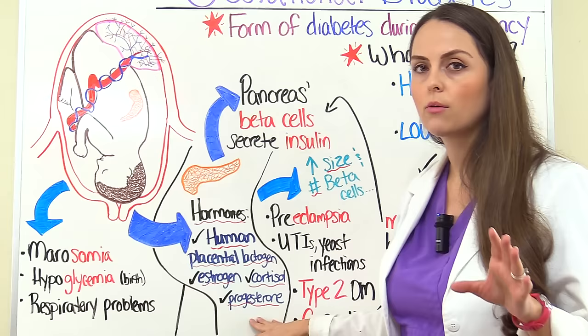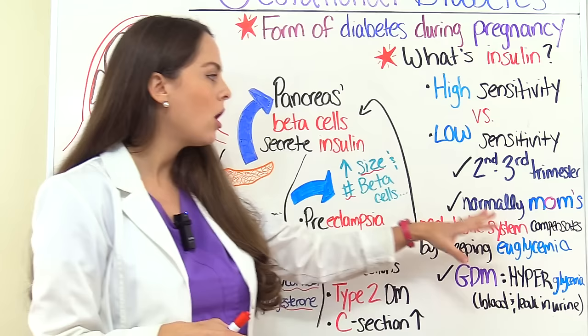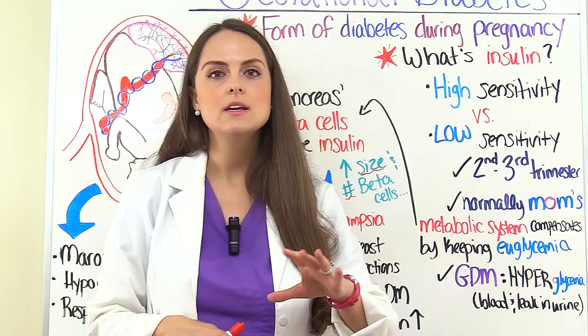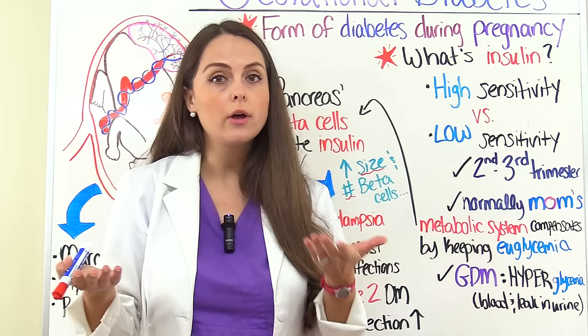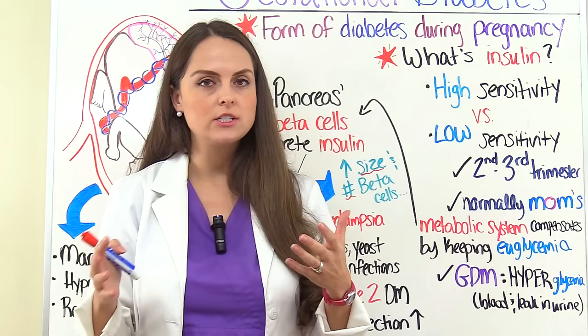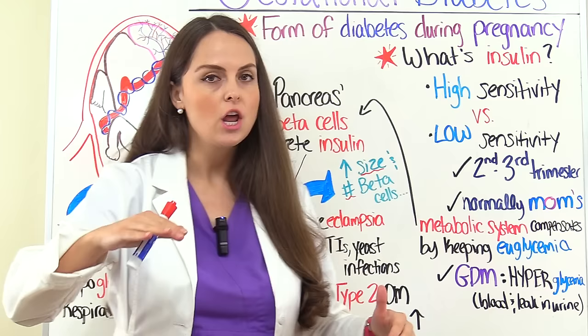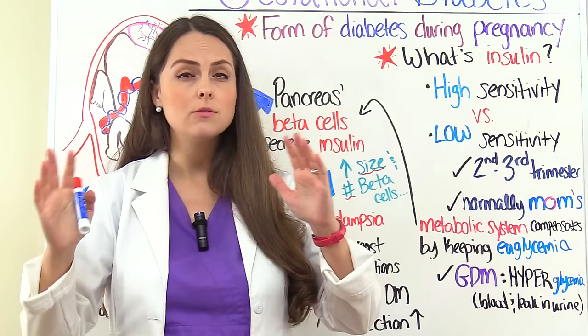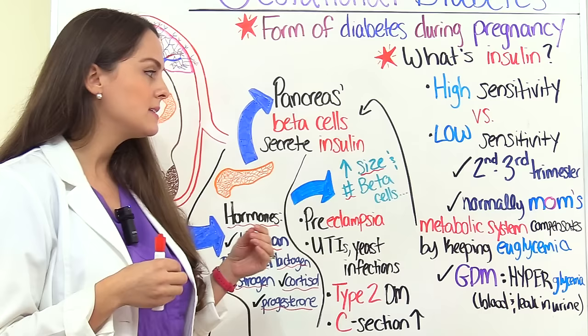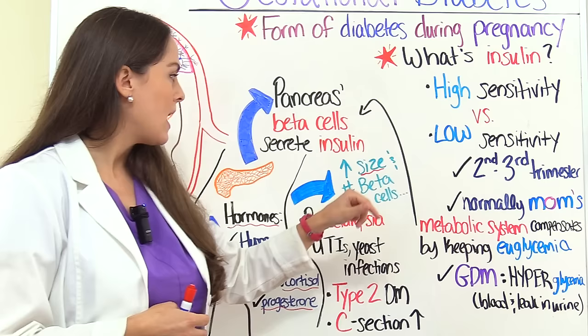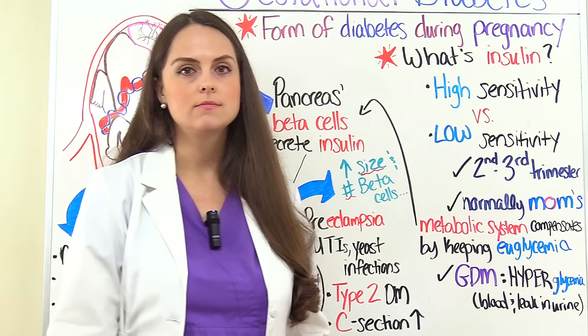Normally mom's body is going to be able to compensate for this low insulin sensitivity. Because when we have more glucose staying in her blood, it can increase her blood glucose level and potentially cause hyperglycemia. But in moms who don't get gestational diabetes, her metabolic system compensates because it wants to maintain euglycemia — normal glucose levels of about 70 to 130 milligrams per deciliter. It doesn't want her going higher because it can be detrimental to her and the baby. So it increases the size and number of those beta cells to maintain normal glucose levels. However, patients who develop gestational diabetes are having insulin resistance — that compensatory mechanism really isn't occurring, so more glucose stays in their blood and they're going to have hyperglycemia.